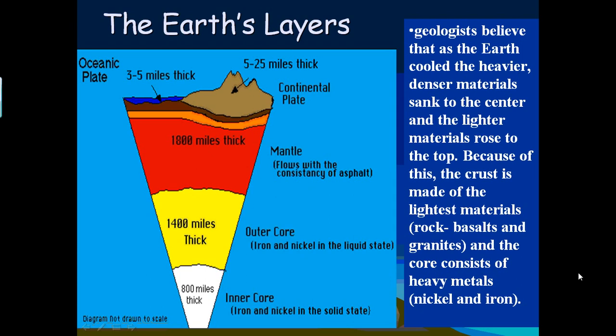If you look at this diagram, it shows all the layers of Earth, including the continental and oceanic crust, the flowing mantle, the outer core, and the inner core.